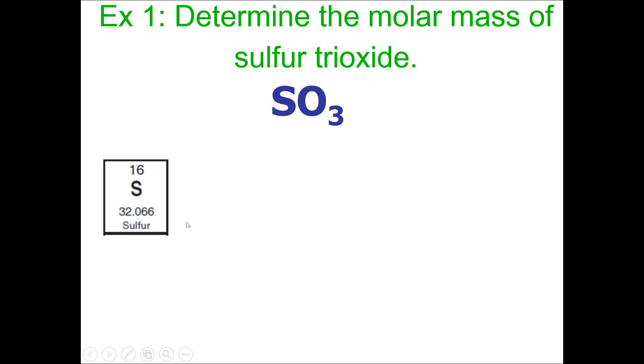This is what sulfur's square looks like on our periodic table. And you're going to take this mass here, 32.066, and add it to oxygen's mass times three.